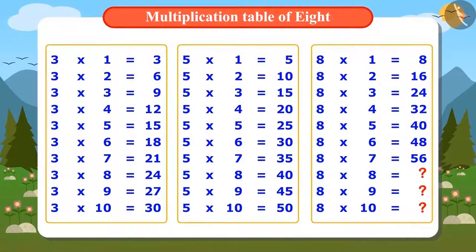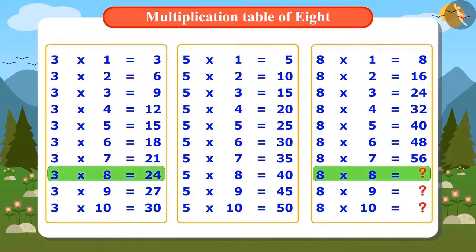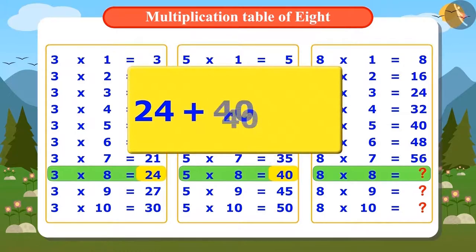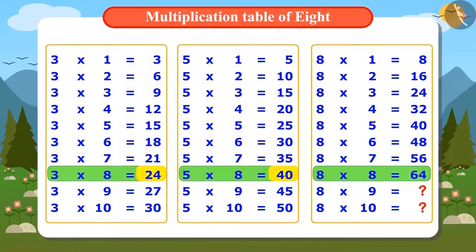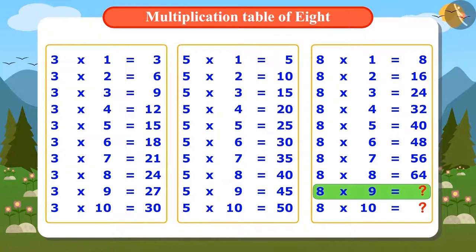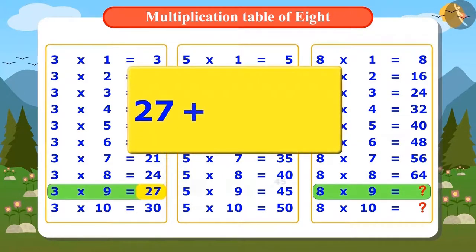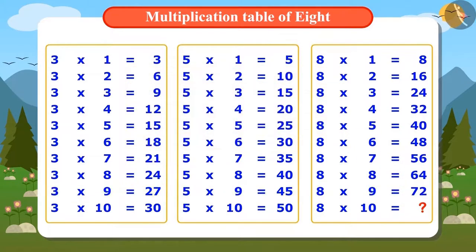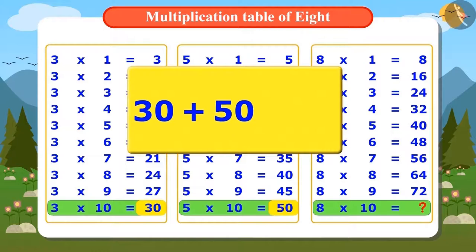Vandana has calculated up to 7 times 8 in the table of 8. To find 8 times 8, we add 8 times 3 and 8 times 5, that is 24 and 40, giving 64. To find 9 times 8, we add 27 and 45, giving 72. For the last entry in the table, we add 30 and 50, giving 80.